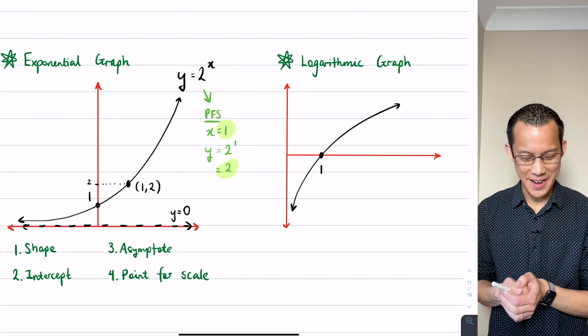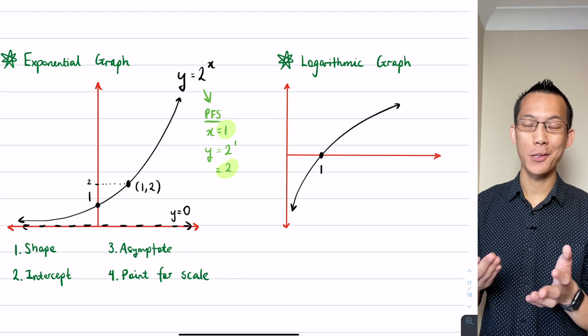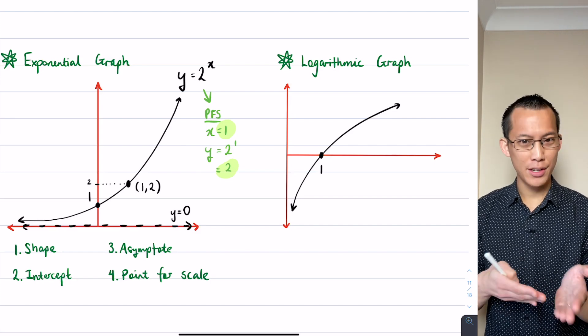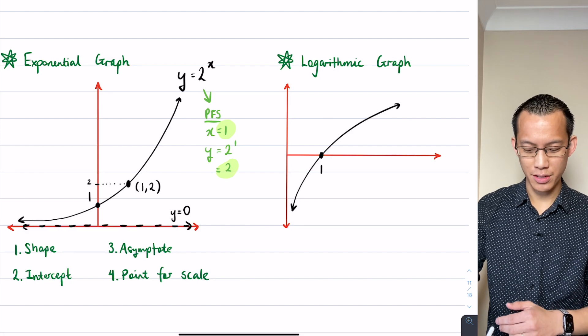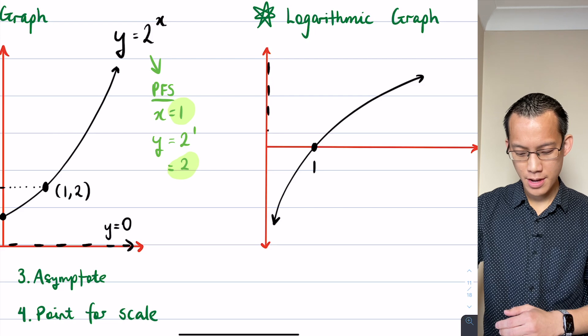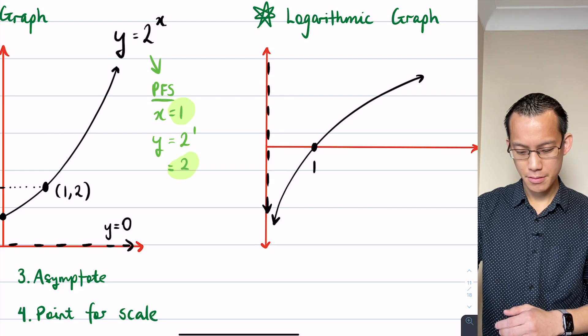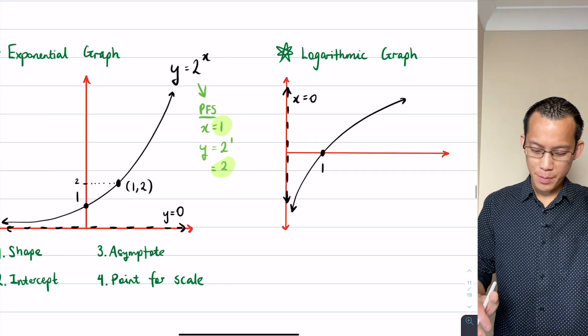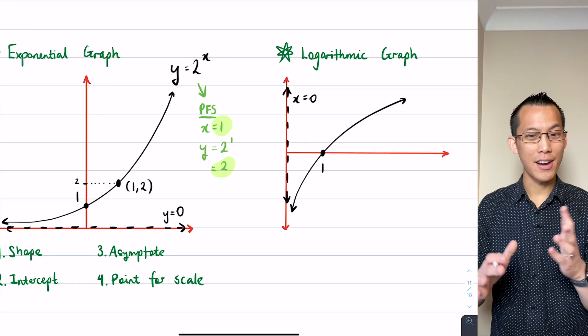Third thing is the asymptote. I previously had a horizontal asymptote of y equals zero, so now you can see I'm going to have a vertical asymptote of x equals zero. I'm going to mark that in with dotted lines, and don't forget the equation there.